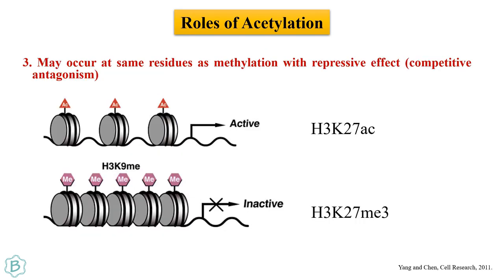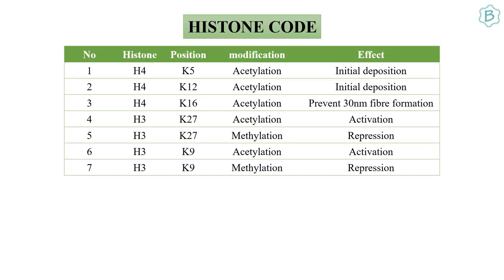Acetylation or methylation can occur at the same residue — this is called competitive antagonism. Histone H3 K9 and K27 can both undergo acetylation and methylation at the same residue. When acetylated, the chromatin is in an active state; when methylated, it is in a repressive state. When K27 and K9 are acetylated, transcription is activated; when methylated, they are repressed.